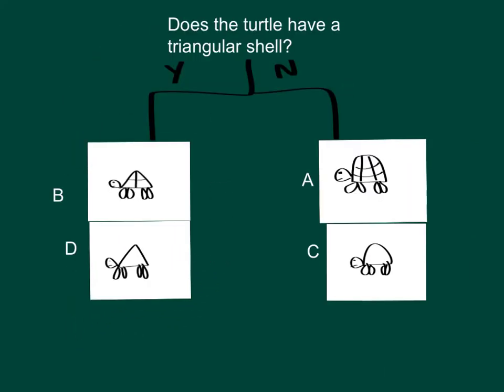So what we've done is ask a question which has a yes or no answer. In this case, does the turtle have a triangular shell? If yes, then it must be either B or D. If no, then it must be A or C.